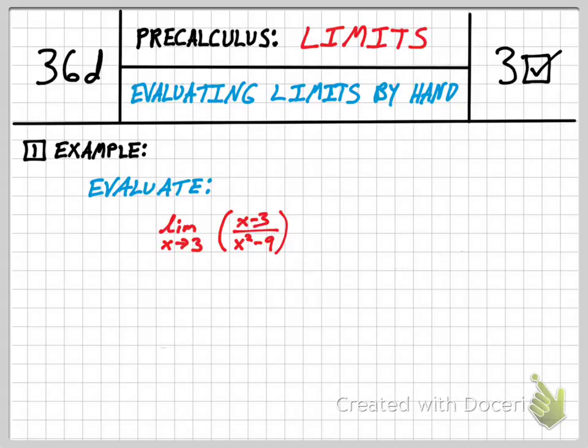Our goal in this first problem is to evaluate the following limit: limit as x approaches 3 of x minus 3 over x squared minus 9. If we tried the direct substitution idea, I get 0 in the top, 0 in the bottom. That's one of those indeterminate answers and it does not mean that it can't be done.